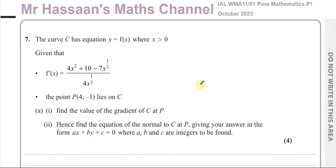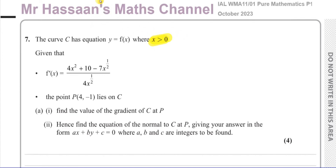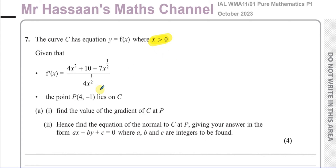This question is about a curve which has equation y equals f of x, where x is greater than 0. Keep that in mind, as it might come in useful later. f'(x) is equal to 4x squared plus 10 minus 7x to the power of a half, all over 4x to the power of a half. That is the gradient function — f(x) has been differentiated.